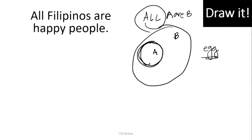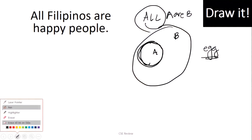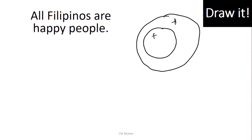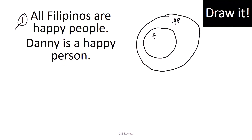So when we say 'All Filipinos are happy people,' it looks like this: the Filipinos circle is inside the happy people circle. All of the Filipinos are contained within the happy people circle. Now that we've drawn the first line, we move on — we're done with that. The second line says: Danny is a happy person.